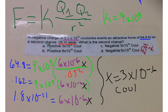Then we will divide 1.8 times 10 to the negative 11 by 6 times 10 to the negative 6, and we will get X equals 3 times 10 to the negative 6 coulombs, answer A.